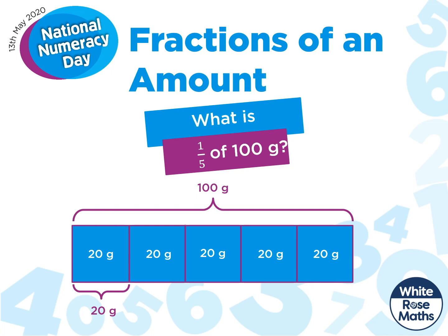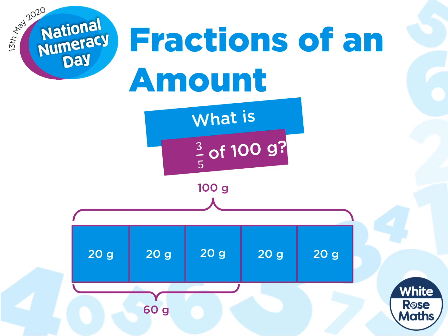What else could we find out from this diagram? Let's change our question. What is three-fifths of 100 grams? Well, this time we're not interested in one of the parts — we need three of the parts. Three-fifths of 100 grams is 60 grams. We can see other things from this diagram as well. Finding two-fifths would be really easy — we've got two parts left over, so two-fifths must be 40 grams. Three-fifths add two-fifths gives us the whole amount, and we must be right because 60 add 40 is 100.